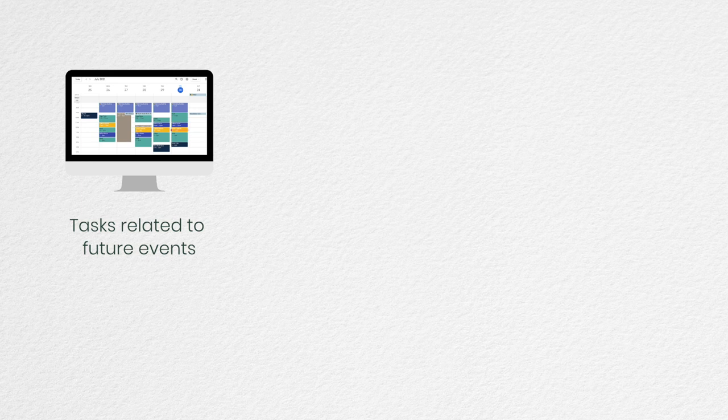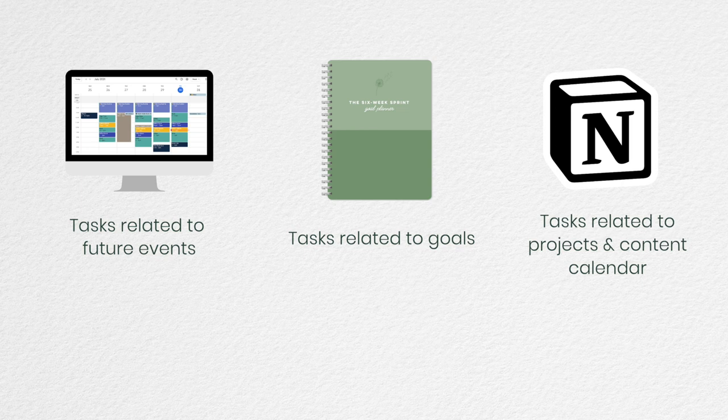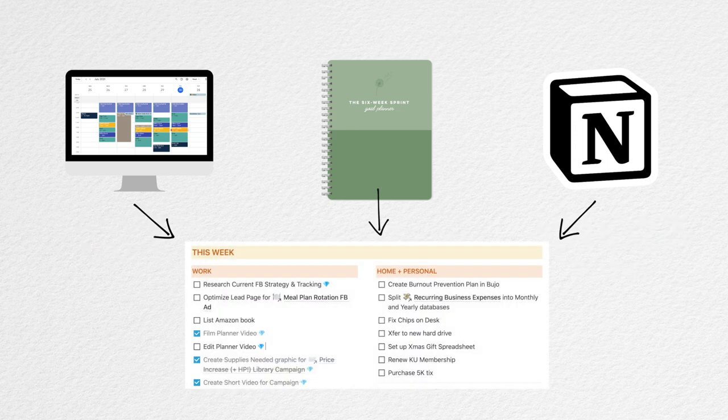Everything that feeds into the weekly task section comes from Google Calendar — checking what birthdays or events are coming up — my goal planner for what six-week sprint tasks are due this week, any projects I'm working on, and content tasks like writing a blog post or drafting my weekly email. This all gets dumped into my weekly tasks on Sunday, I cross things off and delete them when they're done, then start all over again the next Sunday. Everything on the weekly task list is what I reference when I open up my disbound planner to see what I need to do that day.